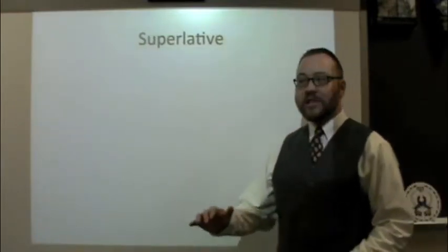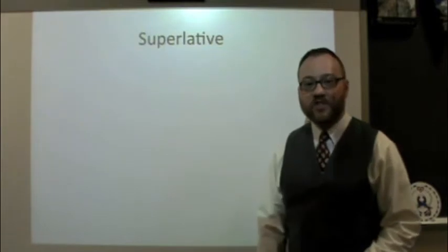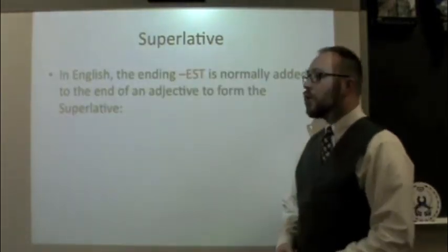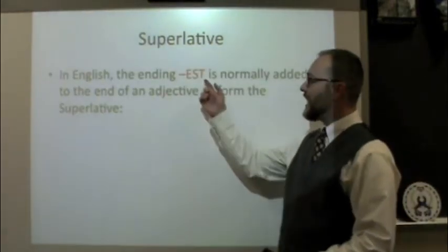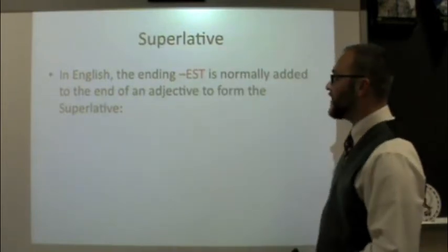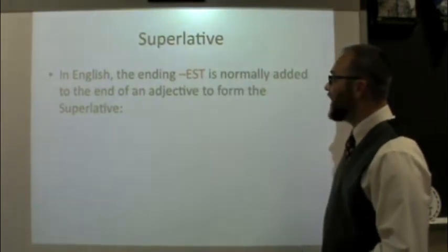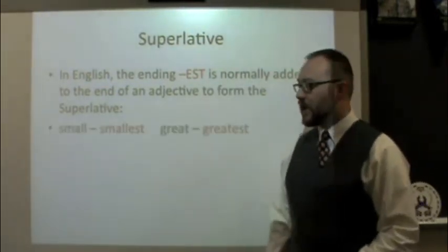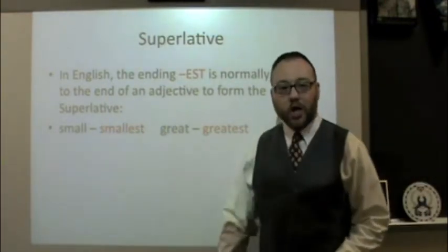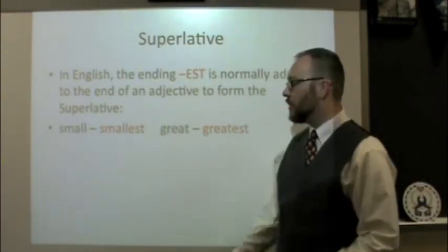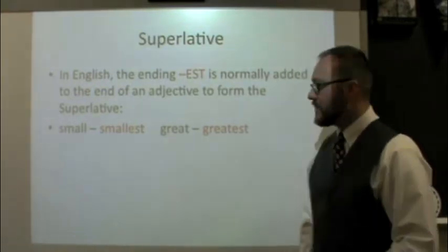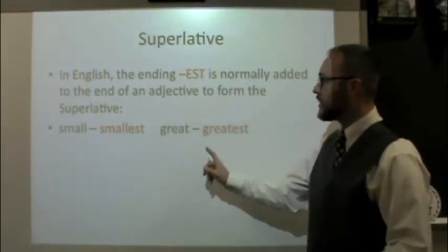Now if we take it one step further, then we're dealing with the superlative form. In English we tend to add the ending -est to the end of an adjective and that gives us the superlative. For example, small becomes smallest, great becomes greatest. That is the superlative form.